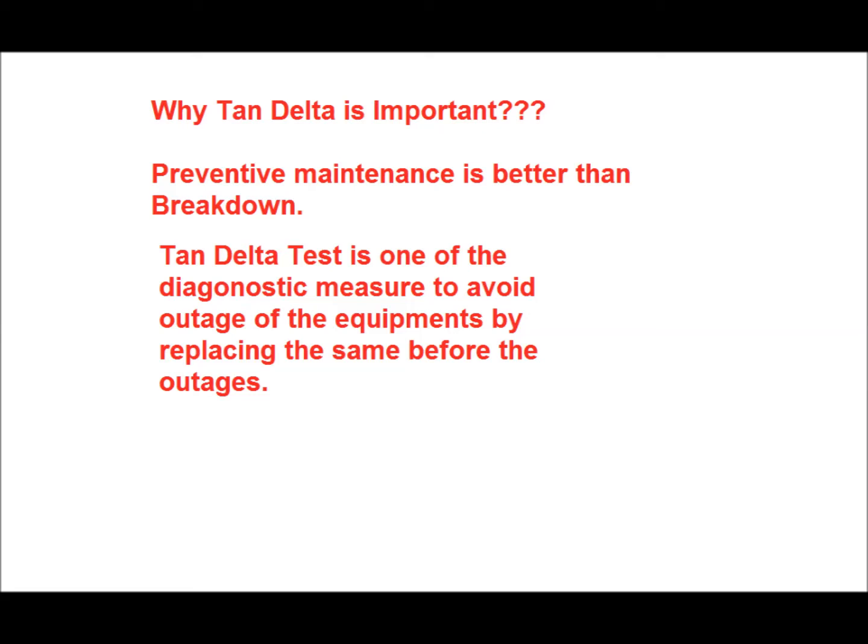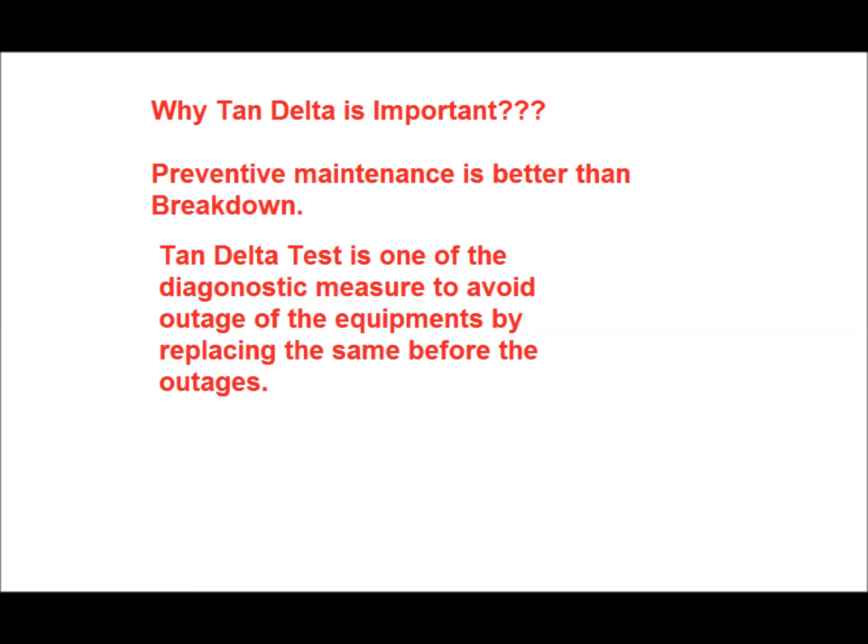Tan delta is a direct indication of power dissipated through the insulation and is a very important measure for the quality of insulation. Variation of tan delta with applied voltage gives a clear indication of the presence of any impurities, imperfections, or voids in the insulating material, and serves as an early indication of failure hazard — meaning the equipment should be replaced as soon as possible.